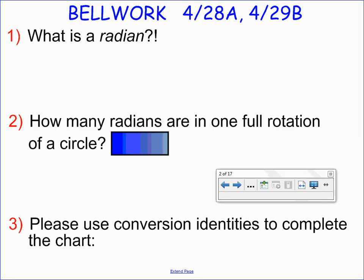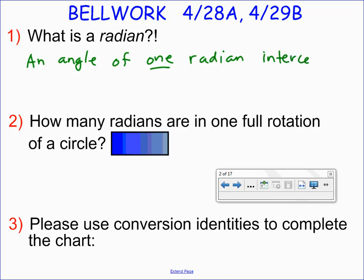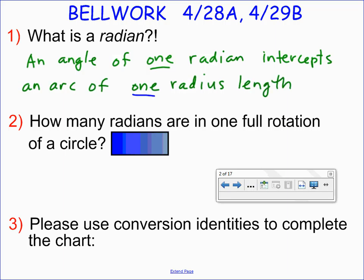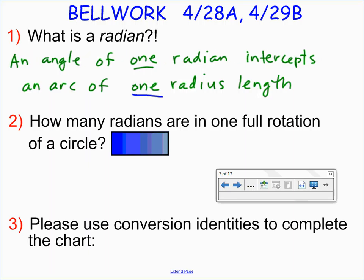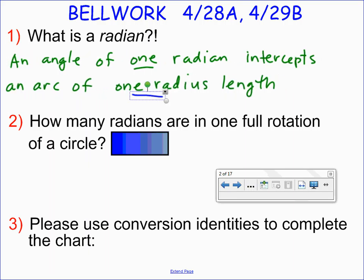That's the definition of a radian — what it is to be a radian. An angle of one radian in size intercepts an arc of exactly one radius length. That's our definition of a radian. Let's see if we can get a picture for that.